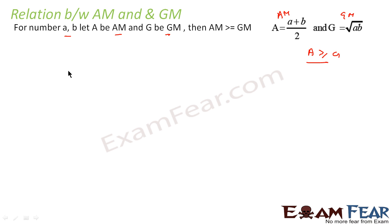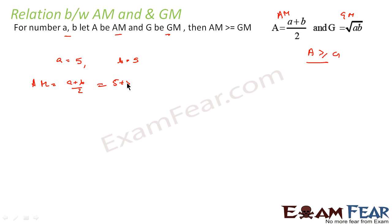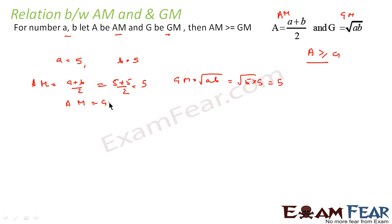We can prove this by example. Let's take a equal to 5 and b equal to 5. When both numbers are equal, AM equals GM. AM is (5 + 5)/2 = 5, and GM is root of 5 into 5, which is also 5. So here AM is equal to GM.